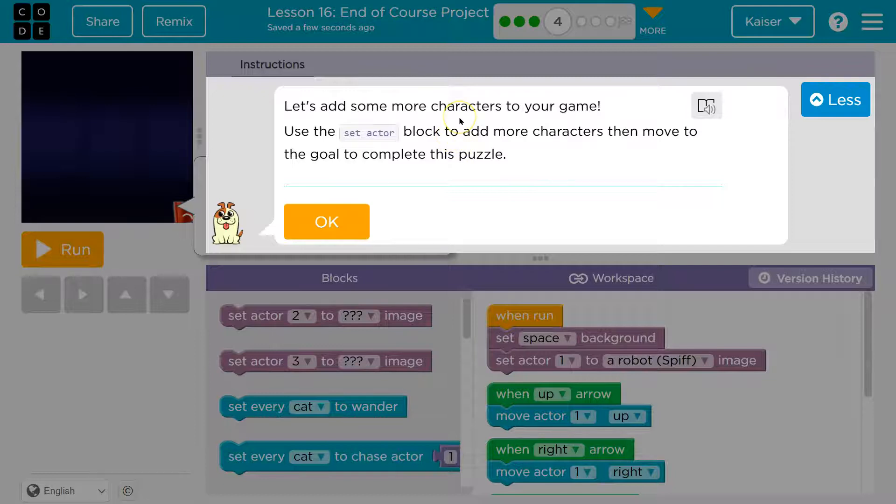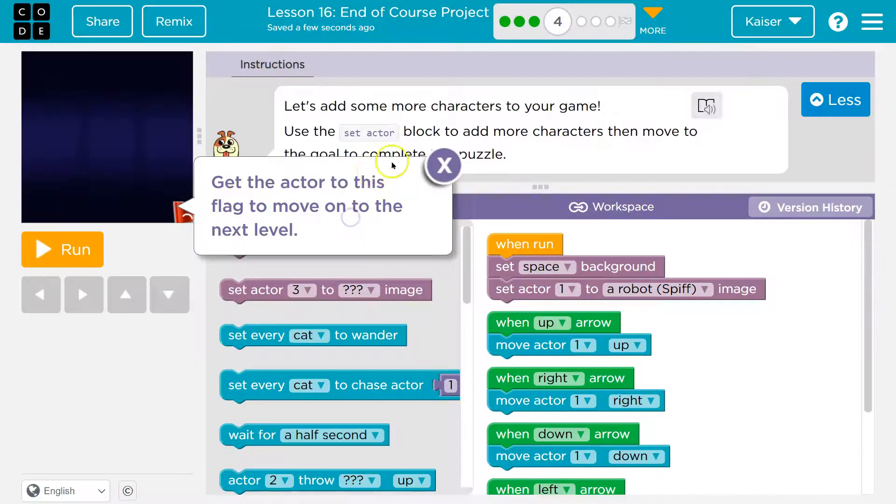All right. Let's add something, some more characters to your game. Use the set actor block to add more characters, then move to the goal to complete this puzzle. Get the actor to this flag. Okay. Let's add some more characters.